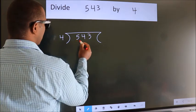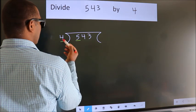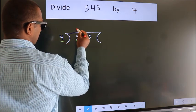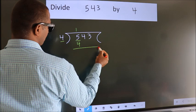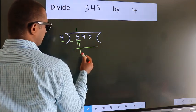Here we have 5, here 4. A number close to 5 in the 4 table is 4, once 4. Now we should subtract. We get 1.